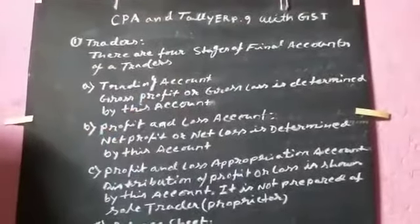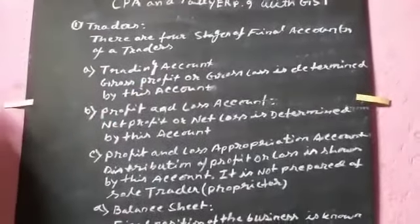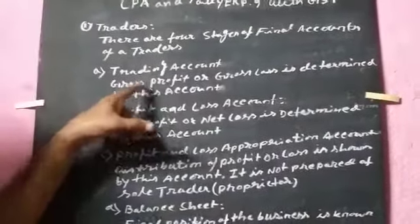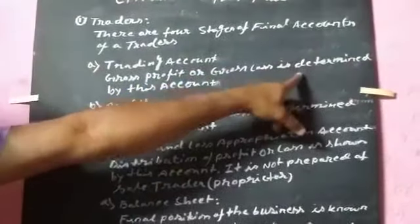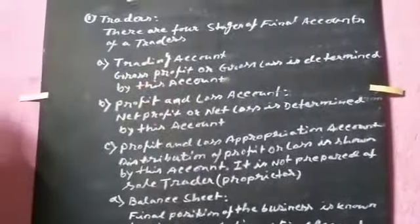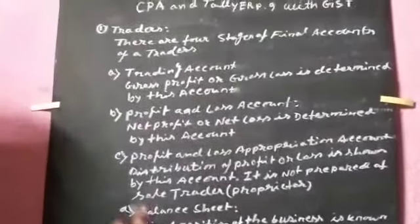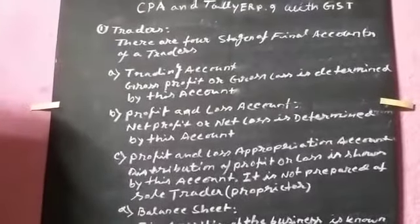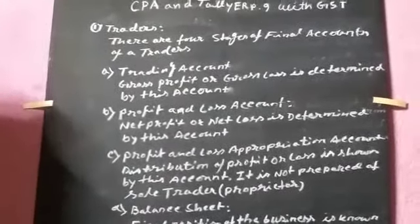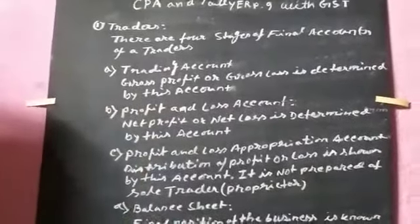So, trading accounts, what are trading accounts? Gross profit or gross loss is determined by this account. So, in this account, what do you calculate? Either the gross profit of that company or gross loss of that company is determined by this account.